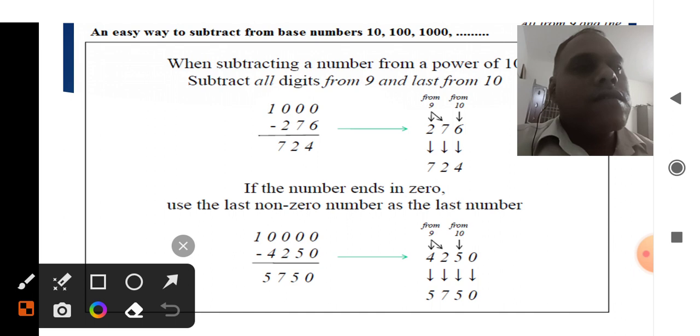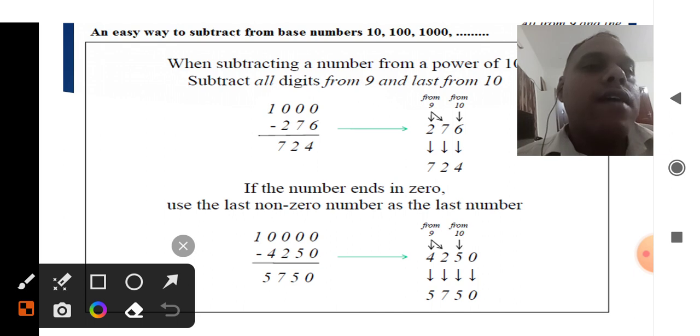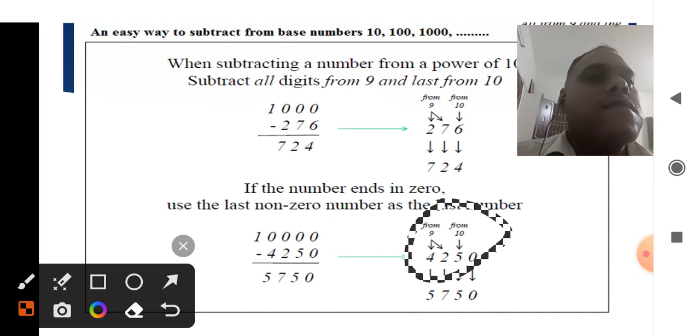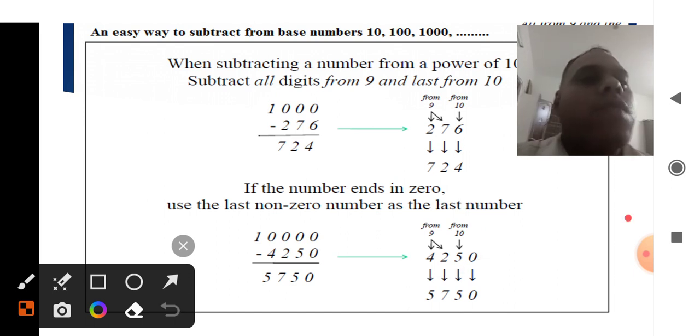The concept is: the last number separates from ten, remaining from nine. Ten minus five gives five, and the remaining two numbers are subtracted from nine. We get the final answer: 5,750. This is one of the methods.